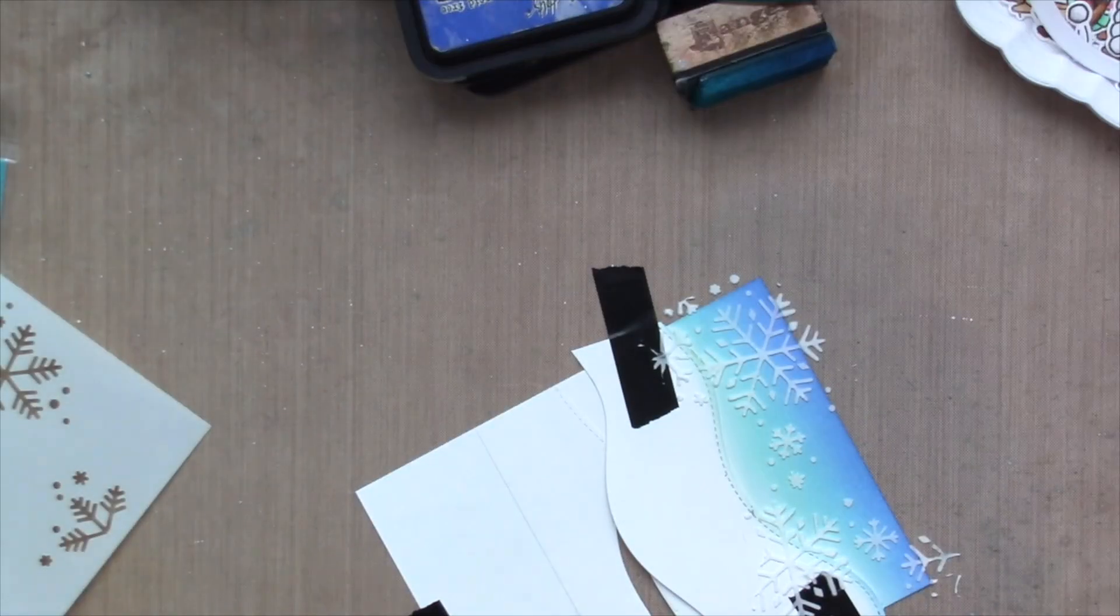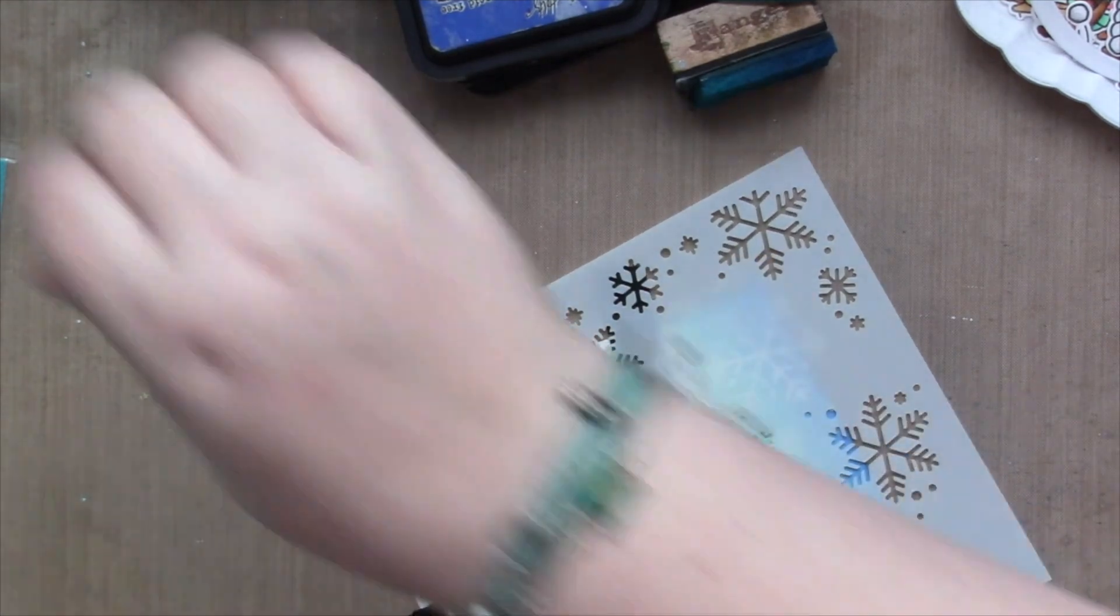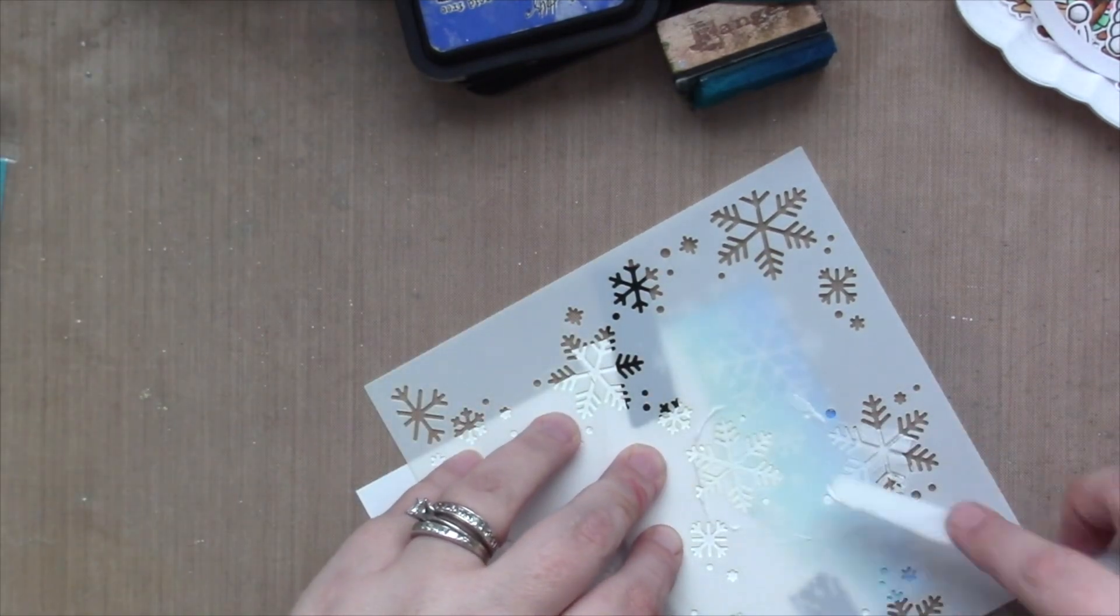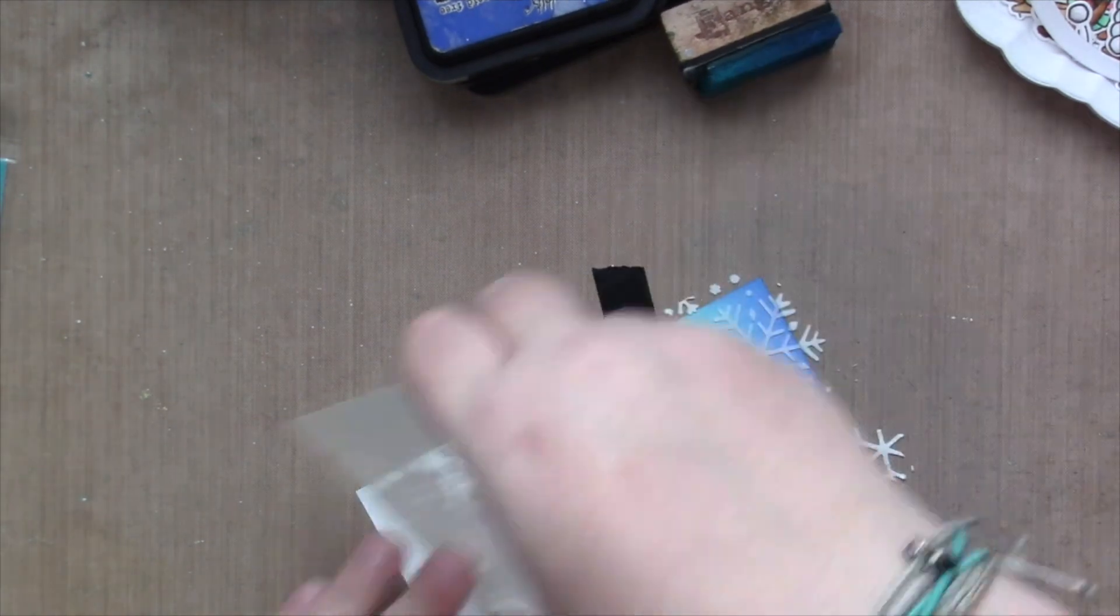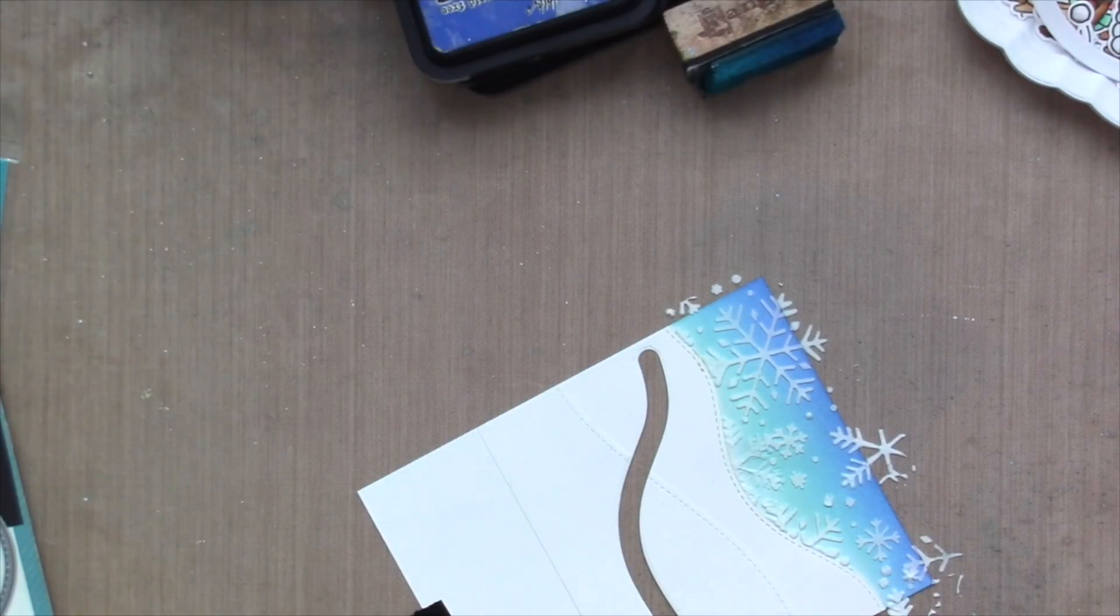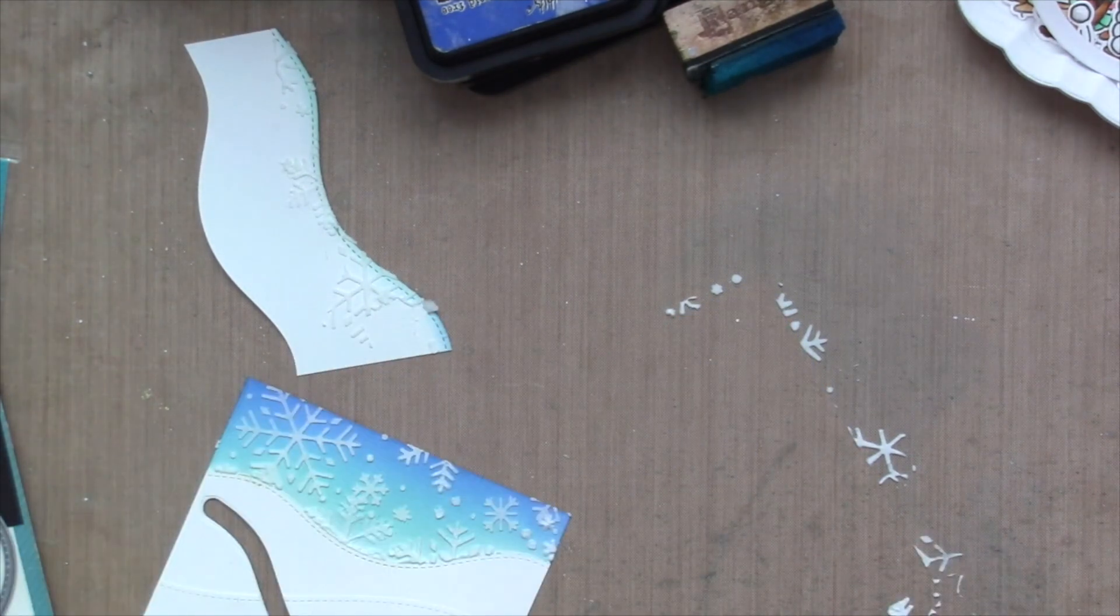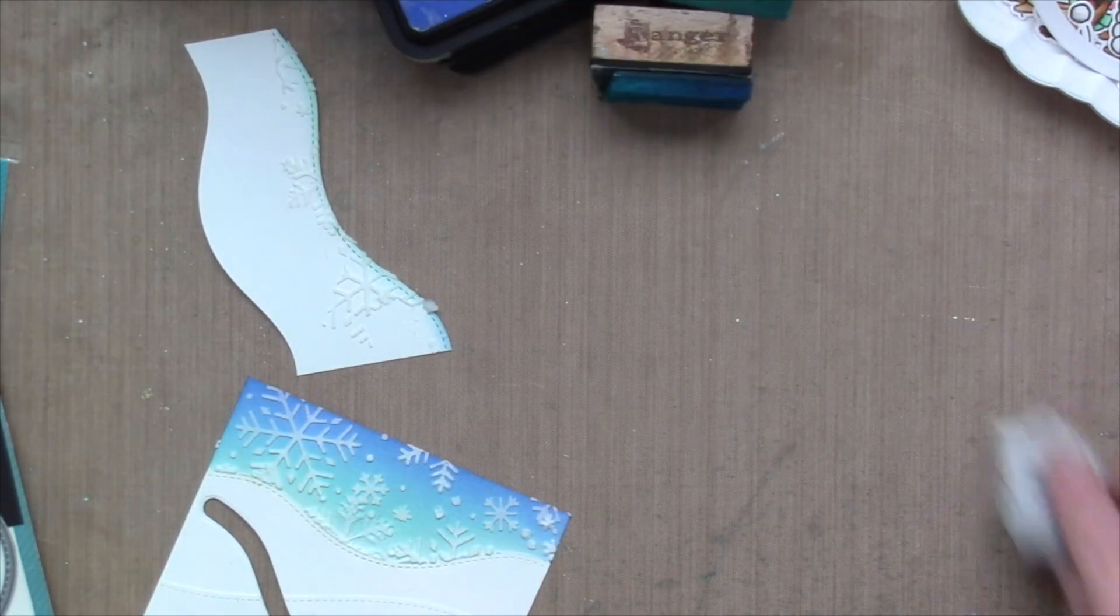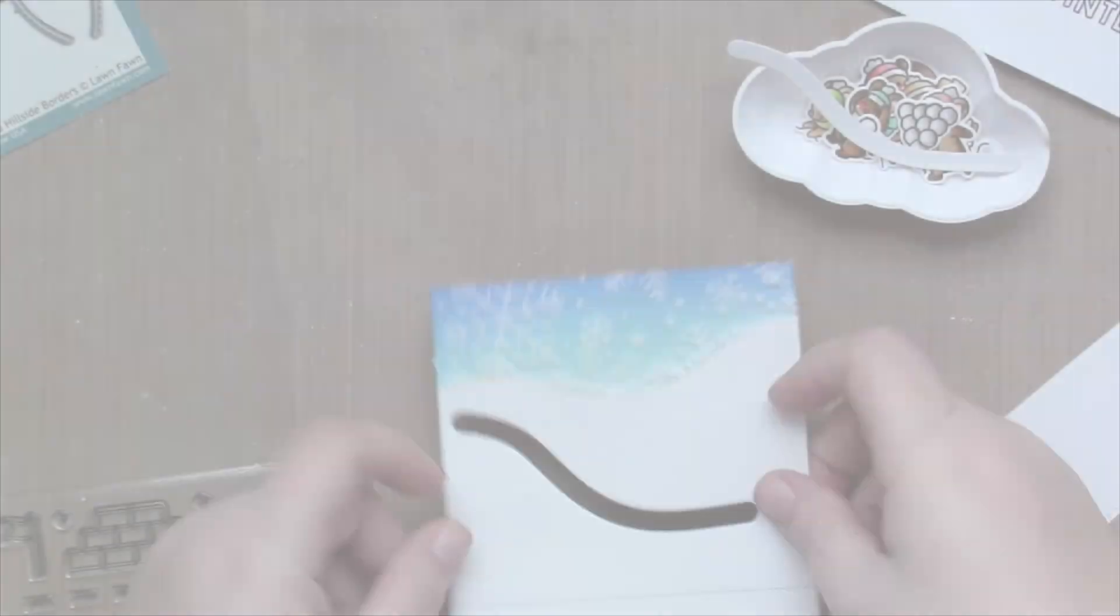Then I'm going to use the snowflake background stencils and some of the white embossing paste from Lawn Fawn and let it dry. Once it's dry, I'm going to use the other stencil in the set. Same process, white embossing paste, set it aside, let it dry and take off the mask. It's perfect. Nothing got on where it wasn't supposed to. And I managed to save that part.